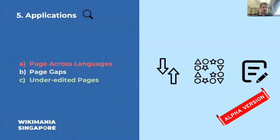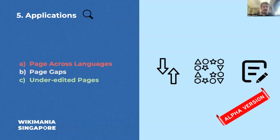The second one is Page Gaps. Similar to knowledge gaps, admin page gaps allows you to detect a valuable admin page in another language that does not exist in your language, so that you can start creating it. And the third one is Under-Edited Admin Pages, which allows you to identify admin pages that are valuable in your language but have not been edited for a long, long time.